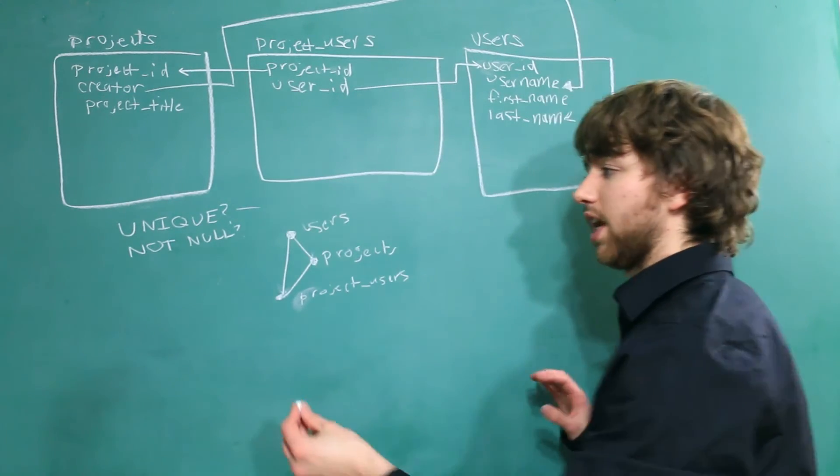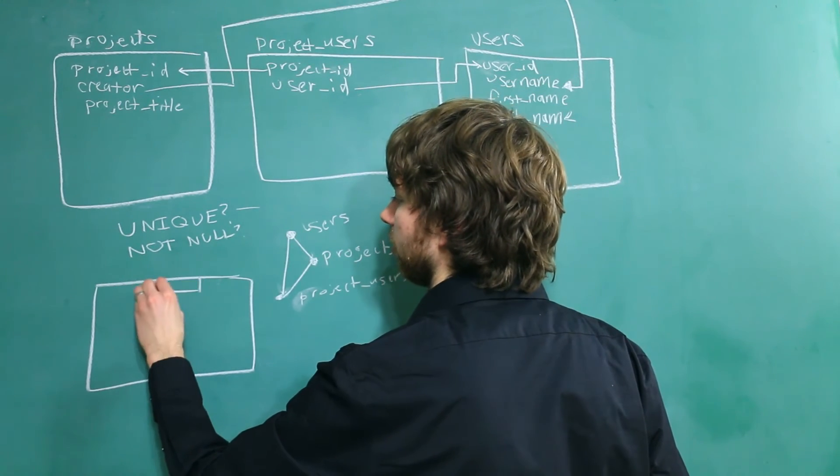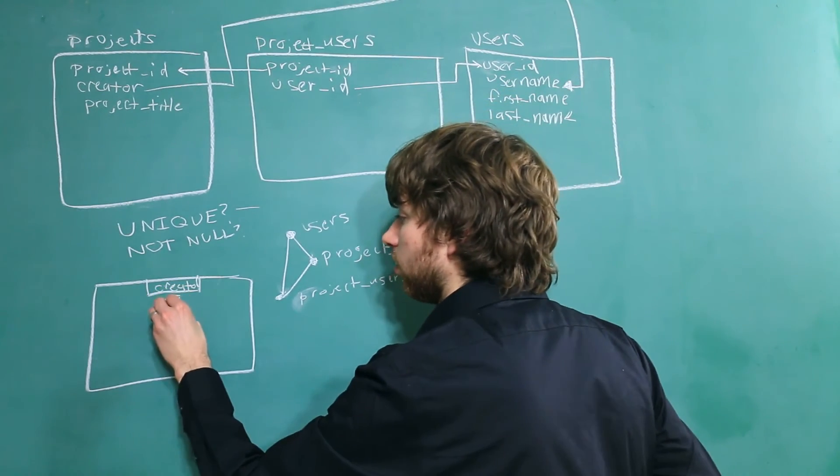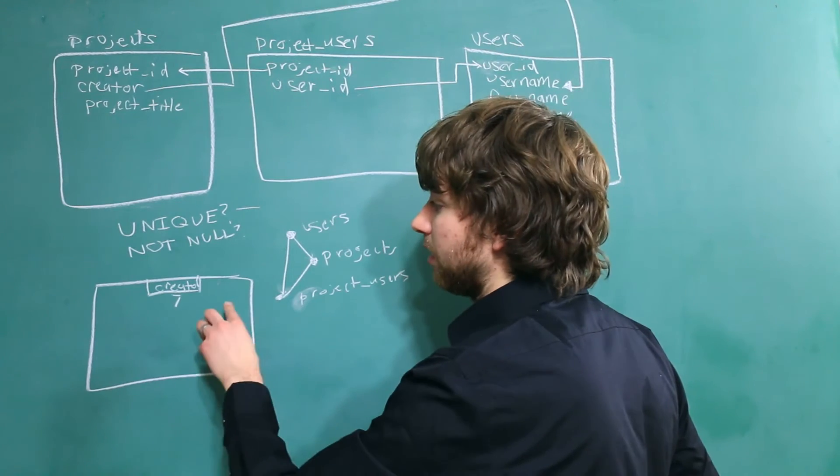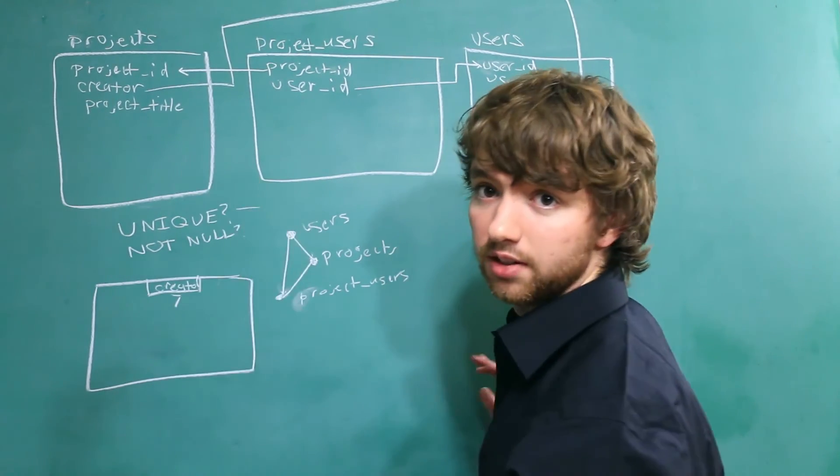If it's unique, that means within our table, we have a column and it's a creator. We can only reference a specific creator one time. So if it's seven, that means that's the only time that creator can be in the projects table.